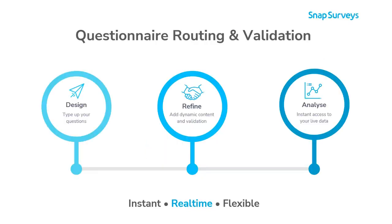This is the second of three XMP webinars. In the first one we did the boring bit, which was typing up the basic questionnaire. In this second webinar, we'll be looking to refine the survey, making the questionnaire more dynamic and interactive using routing and masking to guide the respondent throughout the answering process. And then the final part, which will be in July, we'll be looking at the analysis.